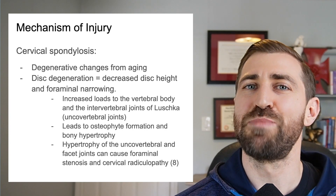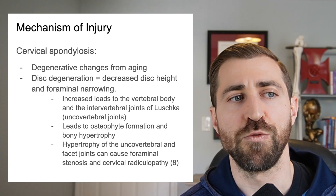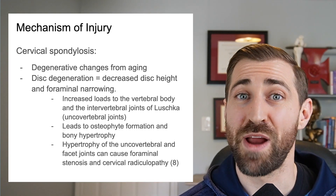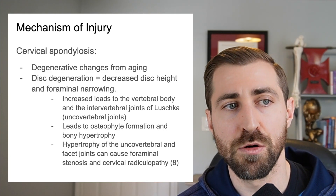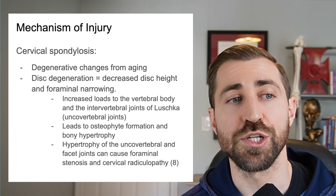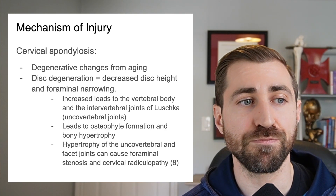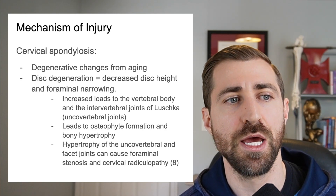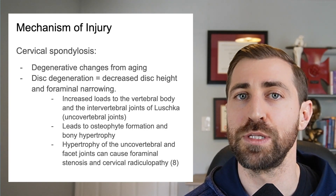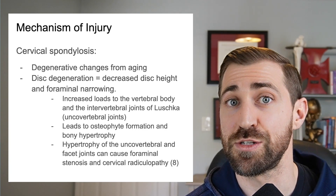Cervical spondylosis can also be one of the reasons why we end up with cervical radiculopathy. If we have these degenerative changes from aging — decreased disc height as well as foraminal narrowing — this is going to increase loads to the vertebral body and the intervertebral joints of Luschka, the uncovertebral joints, leading to osteophyte formation and bony hypertrophy. Hypertrophy of the uncovertebral and facet joints can cause foraminal stenosis and cervical radiculopathy. This is actually much more common than disc herniations.